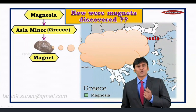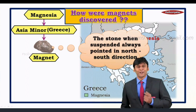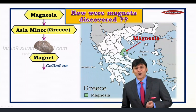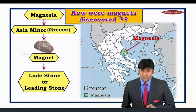The stone, when suspended, always pointed in the north-south direction. They understood this stone was special and it was used for navigation — for traveling from one place to another. That is how it came to be called the lodestone, or the leading stone.